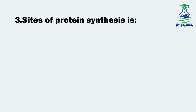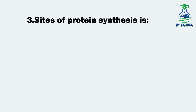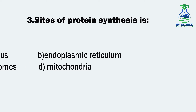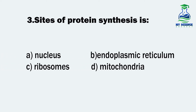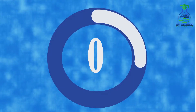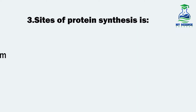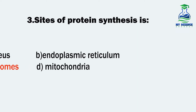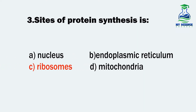Question 3. Sites of protein synthesis is: A. Nucleus, B. Endoplasmic reticulum, C. Ribosomes, and D. Mitochondria. Let us see what is the correct option. It is C. Ribosomes.